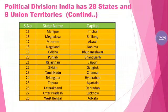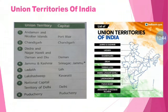You may have noticed that Chandigarh is the capital for two states — Haryana as well as Punjab — though Chandigarh itself is a union territory.